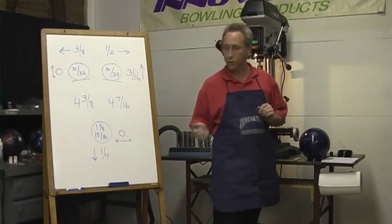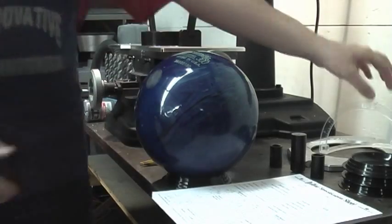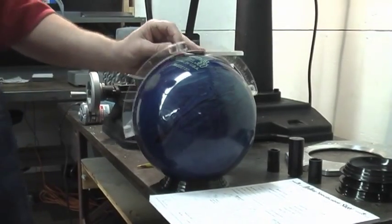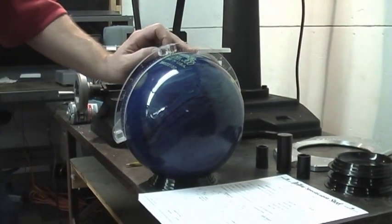Now I'm going to show you how to transfer that information over to the bowling ball. So we're going to use our quarter scale and our yellow marking pencil.